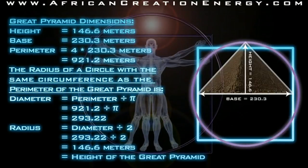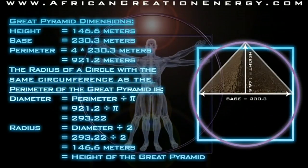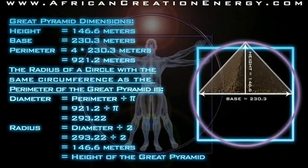So now, the radius of a circle with the same circumference as the perimeter of the Great Pyramid is, all we would have to do is take that perimeter that we calculated, which was 921.2 and divided by pi, and so that circle's diameter would be 293.22, which means the radius would be 146.6 meters, which is the exact height of the Great Pyramid of Giza.